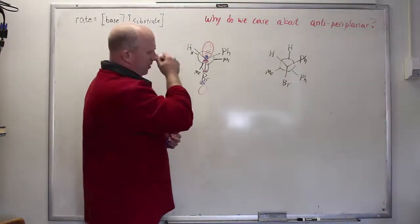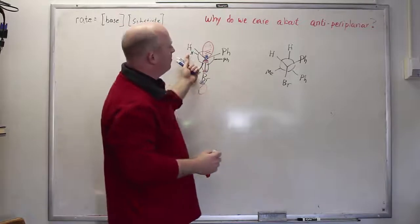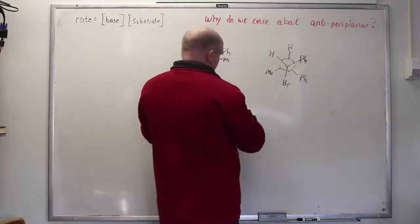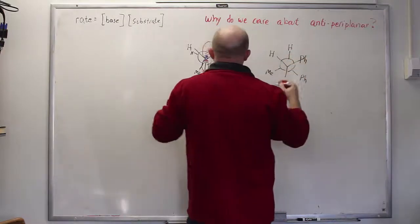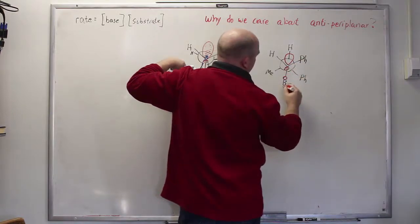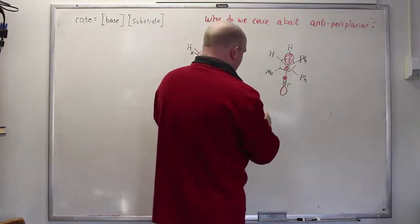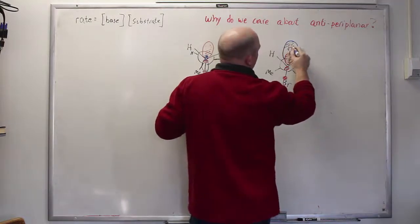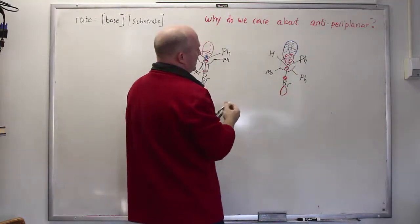Now I've drawn this particular rotation where the carbon in the back has rotated over. The carbon in the back has rotated in such a way that the hydrogen is now well aligned. So in red what I'm drawing is the sigma star orbital for the carbon bromine bond. Meanwhile that carbon hydrogen bond in the back I'm going to draw shaded and in blue and you can see that those two are now nicely aligned.